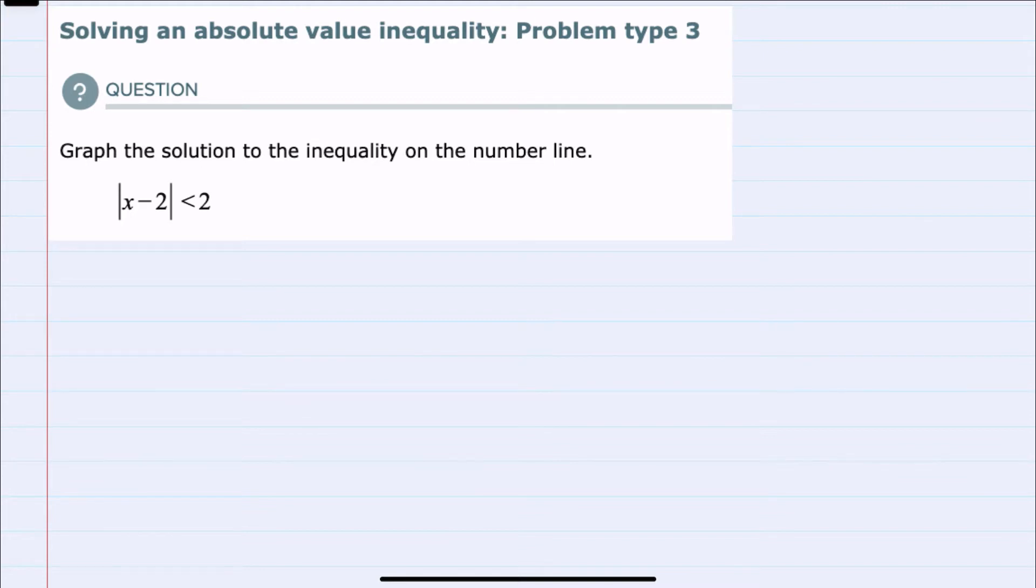We're asked to graph the solution to this inequality on a number line, and since we're asked to graph it, it's probably safe to assume that we're not going to have the two possibilities of no solution or all reals.